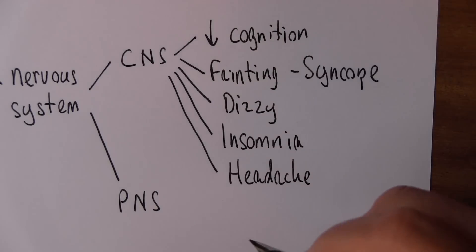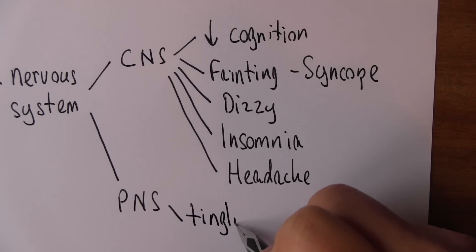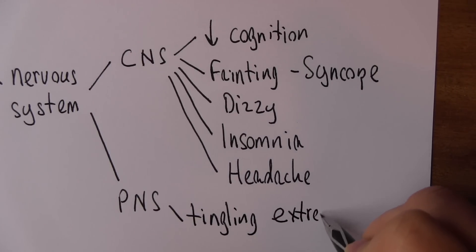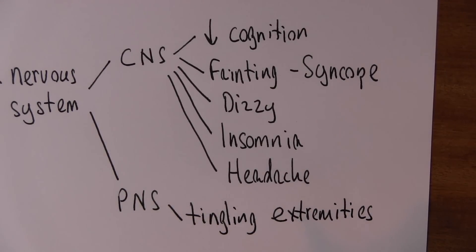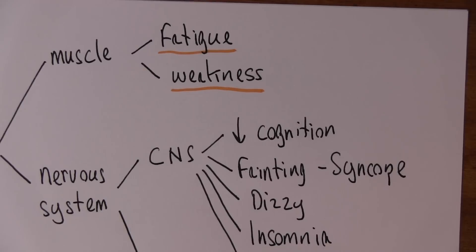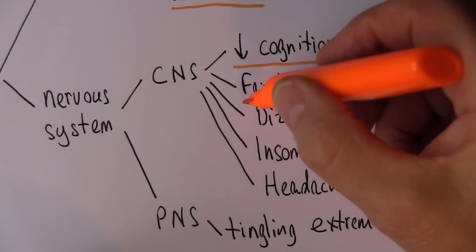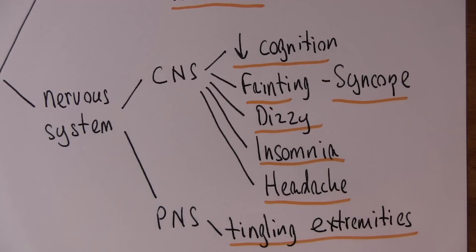In the peripheral nervous system, patients can complain of tingling in the extremities, hands and feet particularly, as the peripheral nerves are somewhat hypoxic. So again we can identify the clinical features here: reduced cognition, fainting syncope, dizziness, insomnia, headache, tingling extremities. This is kind of why we get these things.